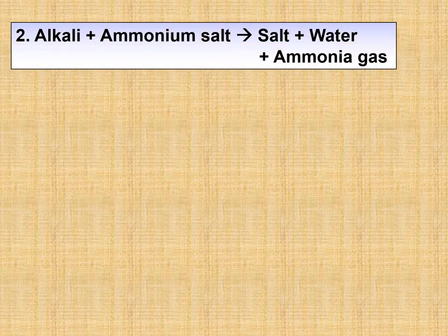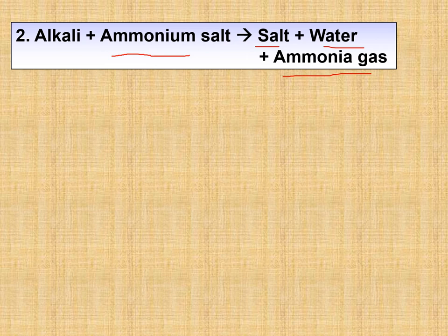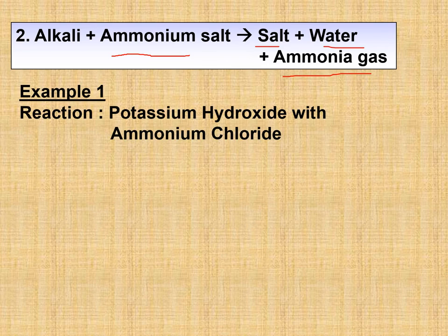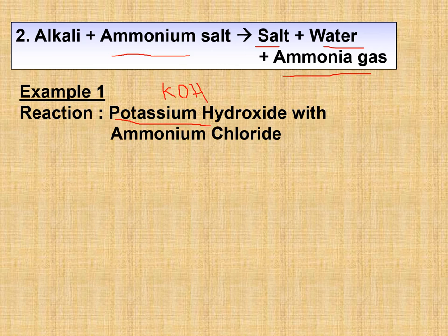The second property of alkali: alkali reacts with ammonium salt to produce salt, water, and ammonia gas. Examples of ammonium salts: ammonium chloride, ammonium sulfate, ammonium nitrate. For example, potassium hydroxide (KOH) reacts with ammonium chloride (NH₄Cl) — ammonium is NH₄⁺ (1⁺) and chloride is 1⁻, so the formula is NH₄Cl.